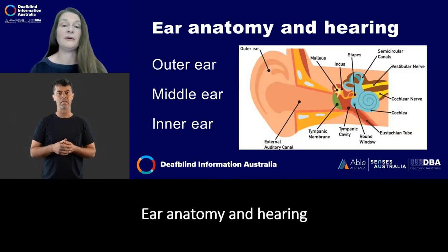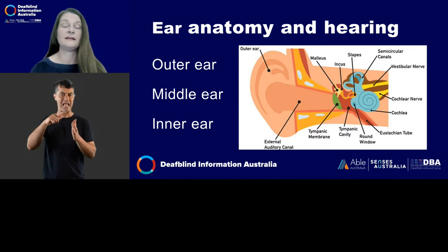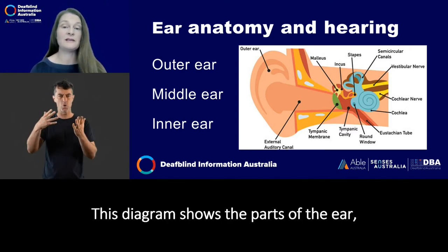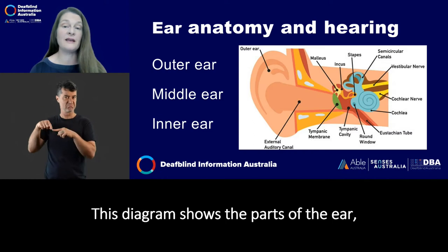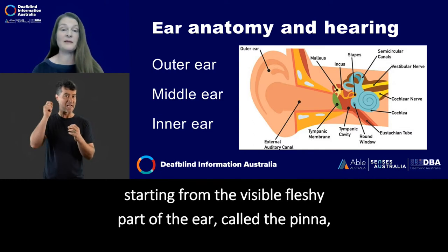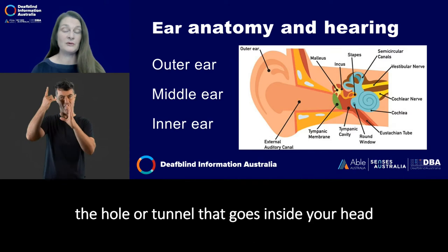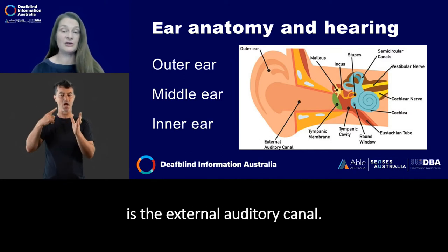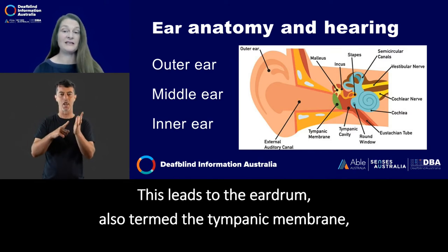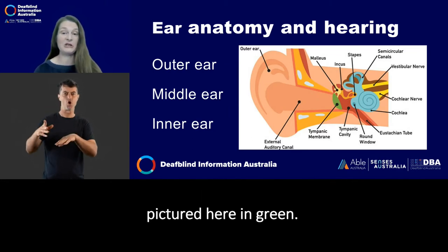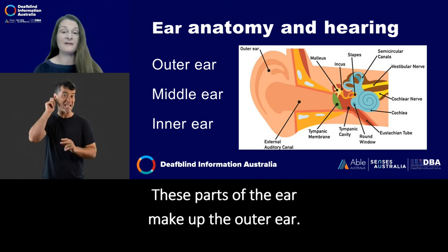Ear Anatomy and Hearing. Here we have a diagram of the ear. This diagram shows parts of the ear starting from the visible fleshy part of the ear called the pinna. The hole or tunnel that goes inside your head is the external auditory canal. This leads to the eardrum, also termed the tympanic membrane, pictured here in green. These parts of the ear make up the outer ear.